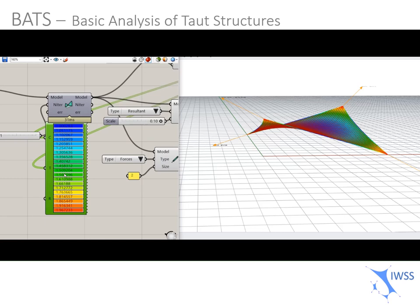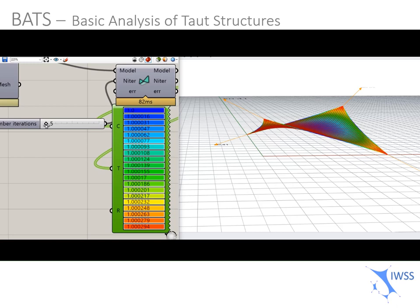As you can see in BATS, it converges quite quickly because in only three iterations, you already have a uniform state.